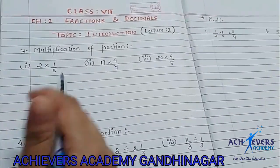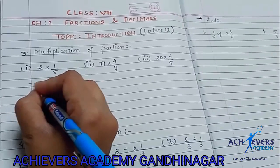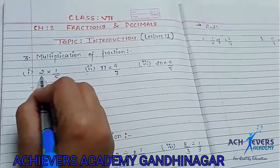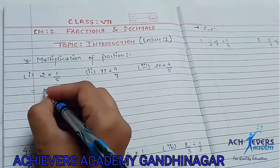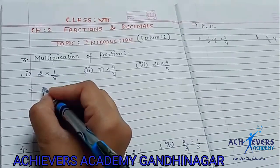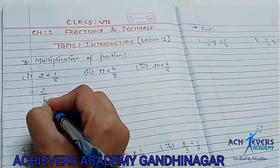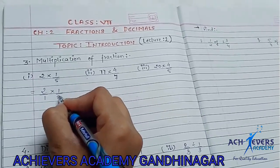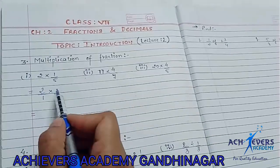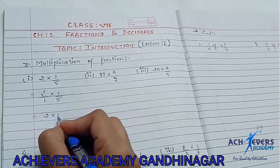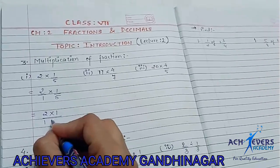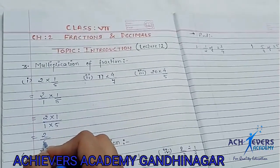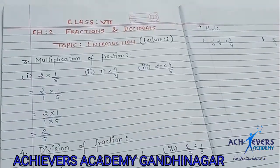As you can see here, we have a question. We have a fractional value for multiplication and a constant number. Because this is not a fractional form, we are going to assume the denominator is 1. Then we multiply: numerator 2 into 1, and denominator 1 into 5. So 2 ones are 2, and 5 ones are 5. Our answer is 2 by 5.